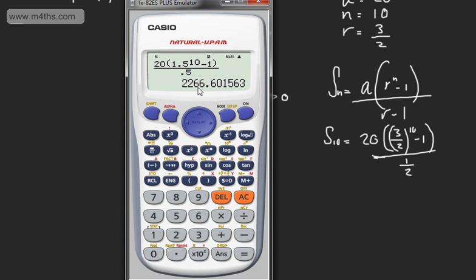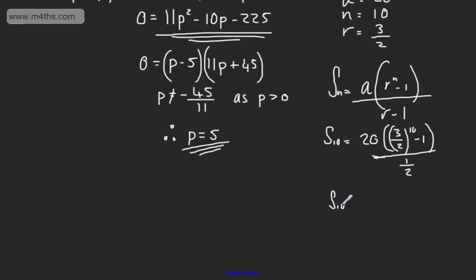So this gives me 2266.6. So we can say to the nearest integer, 2267. So we'll have the sum of 10 terms as 2267 to the nearest integer.